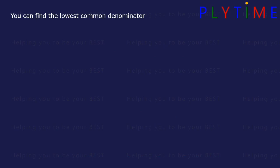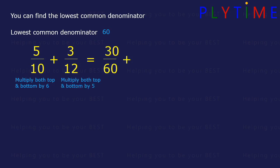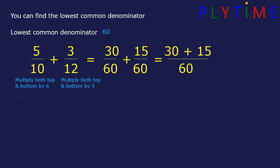You can find the lowest common denominator. Let's find the lowest common denominator for 5 tenths plus 3 twelfths. The lowest common denominator is 60. To convert tenths to sixtieths, we multiply the top and the bottom by 6, so we end up with 30 sixtieths. And to convert twelfths, we multiply the top and the bottom by 5, giving 15 sixtieths. That gives us a total of 30 plus 15 sixtieths, or 45 sixtieths. We can simplify this further by dividing the top and the bottom by 15, and we end up with 3 over 4, or 3 quarters.